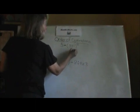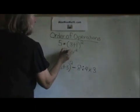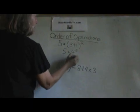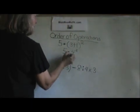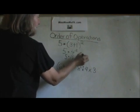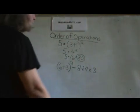3 plus 1 is 4. 4 squared is 16. 5 times 16 is 80. Now here is our second example.